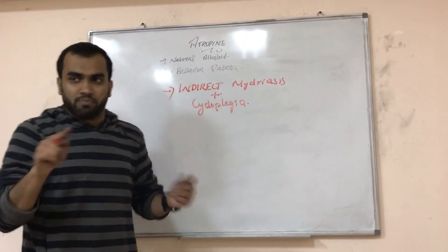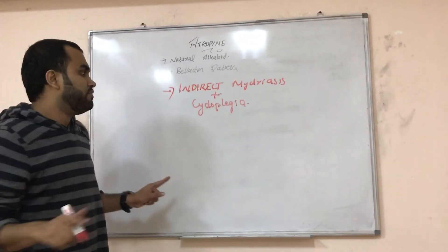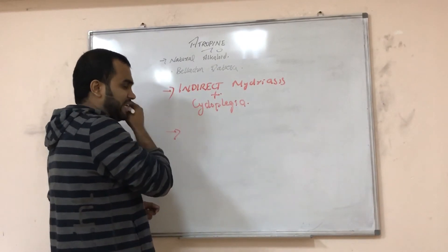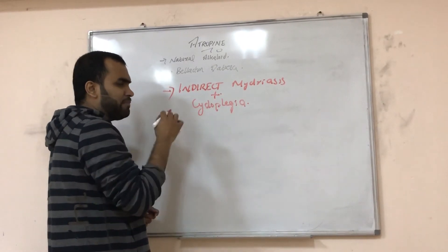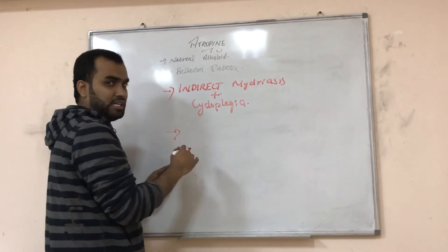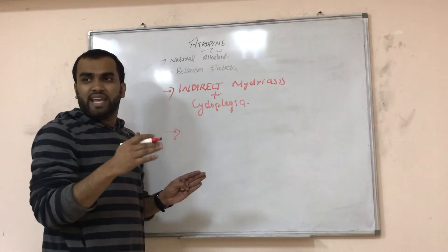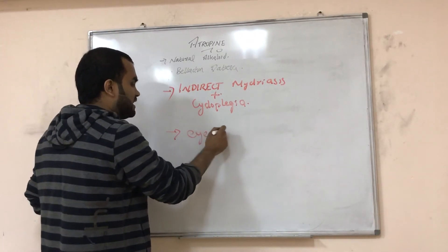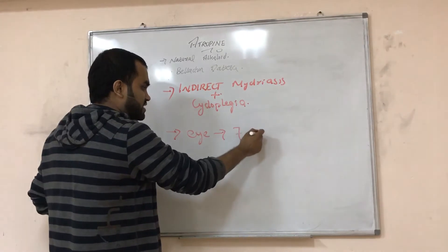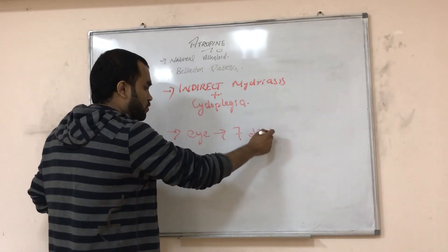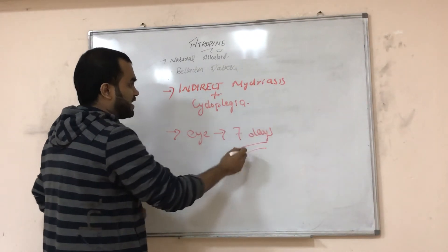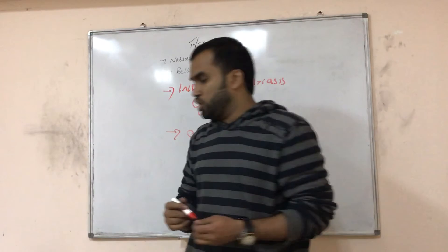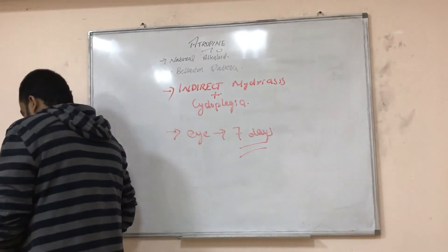The doctor will put a drop of atropine before eye inspection so they can see everywhere. Atropine's action is terminated in one day in all other organs, but in the eye or pupil, the action lasts for around 7 days. So we use atropine for ophthalmoscopy.